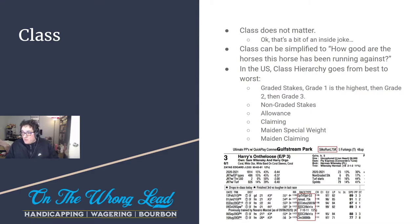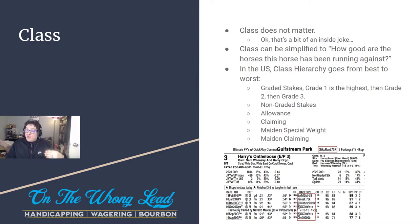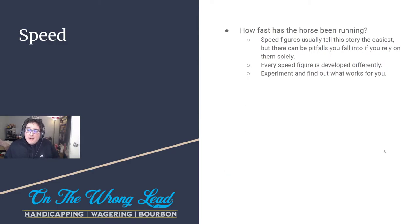So you could say this horse is getting some class relief — people will say the horse is dropping in class. Usually dropping in class means a horse in stakes coming down to claiming or allowance. The biggest drop people talk about is going from maiden special weight to maiden claiming. Other people pay a lot more attention to class and have way better notes than I do, but hopefully that clears up the class portion for you.